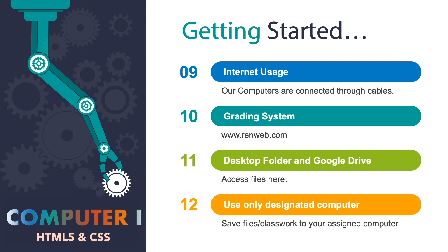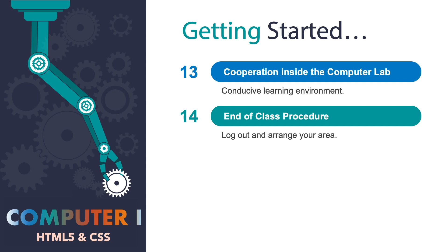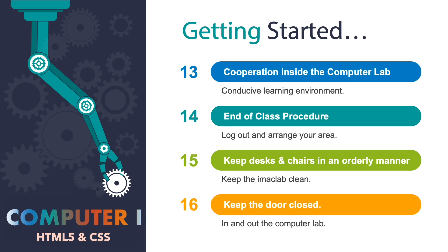Number twelve: use only your designated computer — you can save files or classwork to your assigned computer and not another computer. Number thirteen: cooperation inside the computer lab is important to have a conducive learning environment. Number fourteen: end-of-class procedure — you need to log out and arrange your area when leaving the computer lab. Number fifteen: keep desks and chairs in an orderly manner and make sure to keep the iMac lab clean. Number sixteen: keep the door closed when entering and exiting the computer lab.